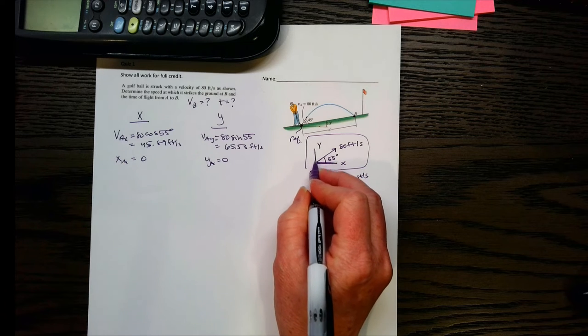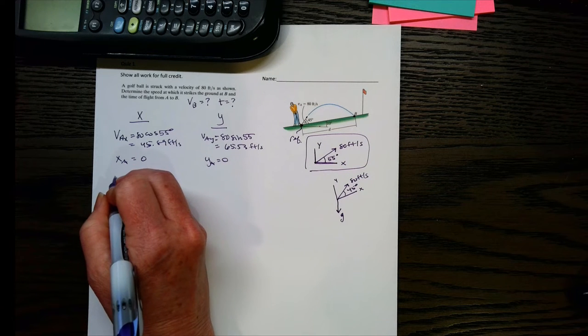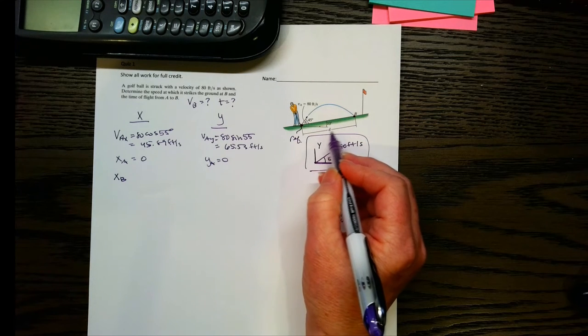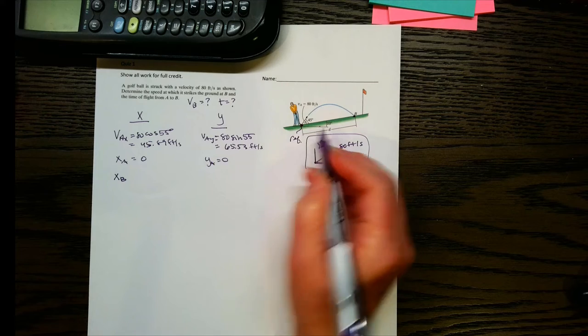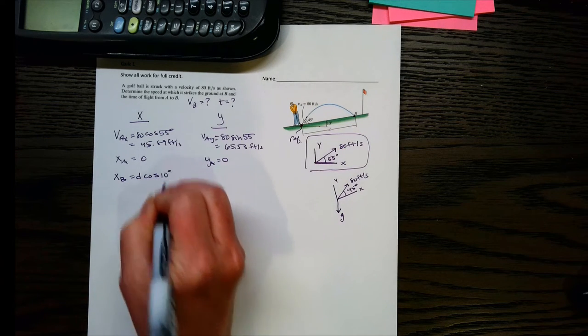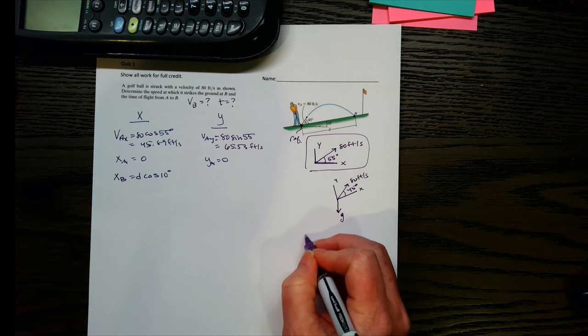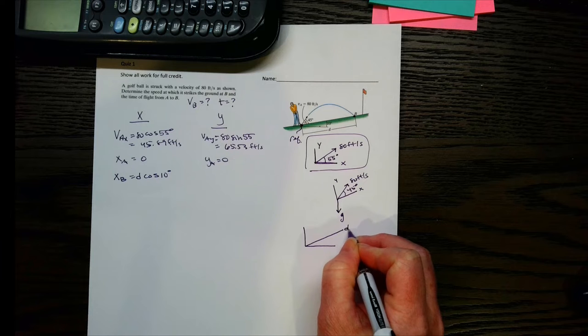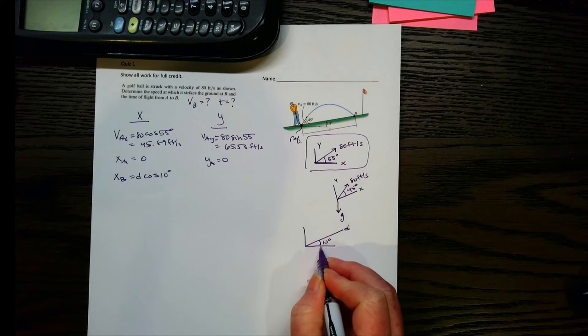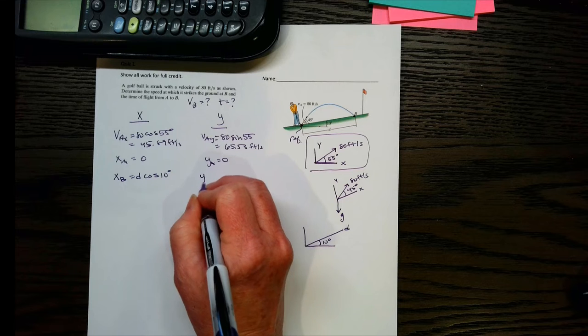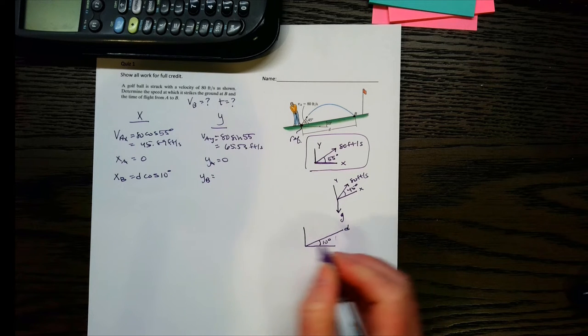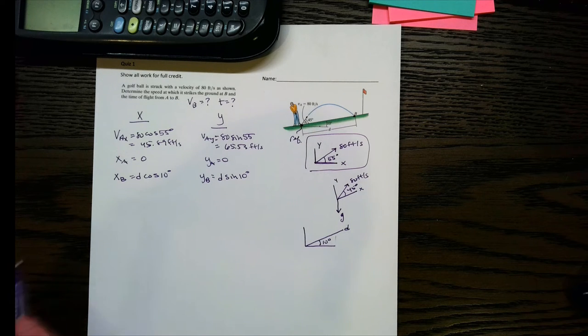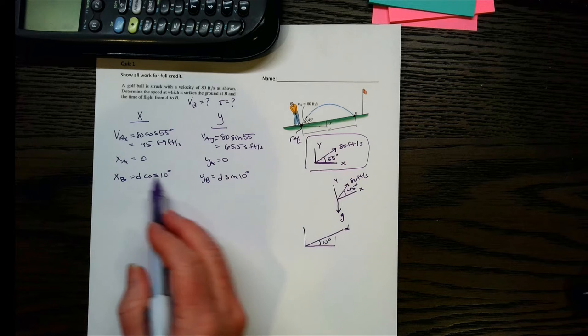So that means my xB over here is going to be this distance d cosine 10. So if we draw it out, basically think of this as being d, and then we have that 10 degree angle. So we've got d cosine 10, and then for y it's going to be this opposite side, so we're going to have d sine 10. And obviously these are both positive because we're going up and then to the right.